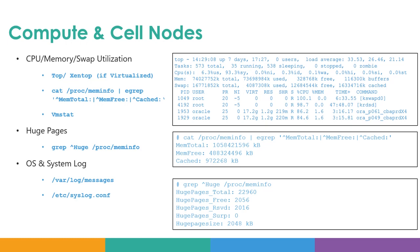Huge pages are another important component of Exadata, where the SGA and database memory use huge pages. You can check the usage of huge pages using 'grep -i huge /proc/meminfo', which gives you the total huge pages allocated, how many are free, how many are reserved, and the huge page size. To calculate free huge pages, multiply the huge pages free blocks by the huge page size — for example, 2056 blocks at 2MB gives your total available huge pages. If memory is very low, you can reduce some huge pages and reallocate them to improve memory utilization. You can also check OS and system logs like /var/log/messages or syslog configuration for any corresponding errors on the compute or cell storage nodes.